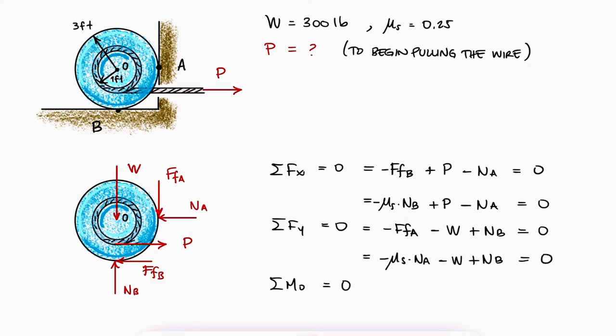The sum of moments about the center O would show a counterclockwise rotation due to P at 1 foot of distance, the friction force at B at 3 feet in this case clockwise, and the friction force at A also at 3 feet away and also clockwise.